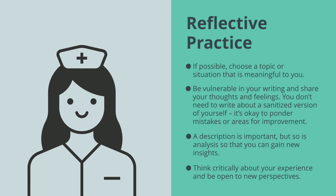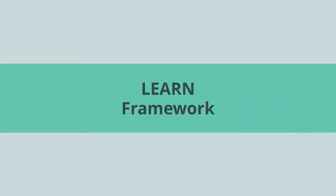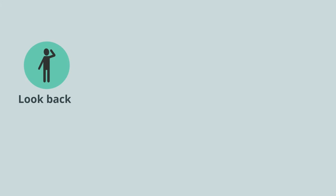One method for reflective writing is called the LEARN Framework, a process developed by the College of Nurses of Ontario. Here are the steps. Step 1: Look back — recall a situation that was meaningful to you in your practice. Step 2: Elaborate — describe the situation from both an objective and subjective perspective. For example, what did you see or hear? Who was involved and what interactions did you observe? What did you think and feel?